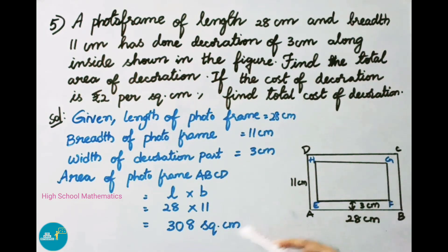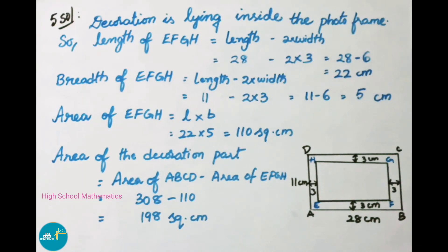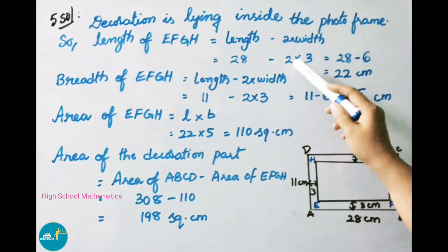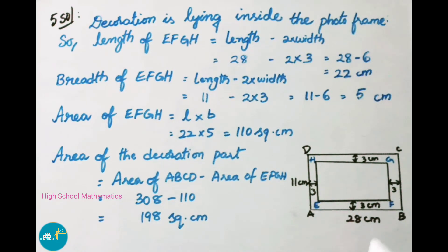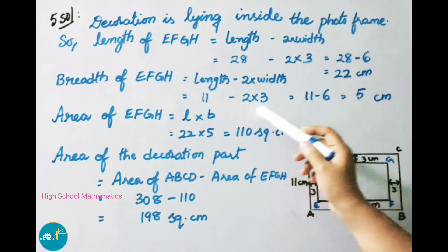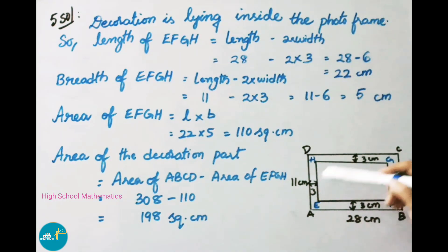Therefore area of ABCD is 308 square centimeters. Now we have to find the area of EFGH. The decoration lies inside the photo frame, so: length of EFGH equals 28 minus 2 times 3, that is 28 minus 6, which equals 22 cm. Breadth of EFGH equals 11 minus 2 times 3, that is 11 minus 6, which equals 5 cm. Therefore length of EFGH is 22 cm and breadth is 5 cm.